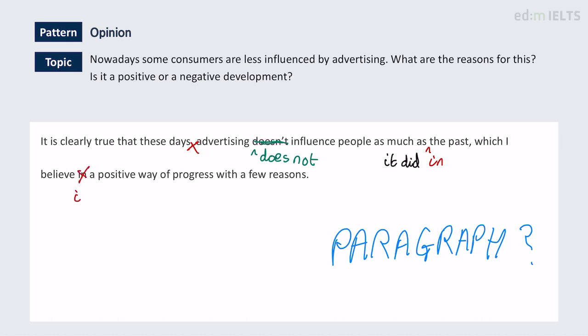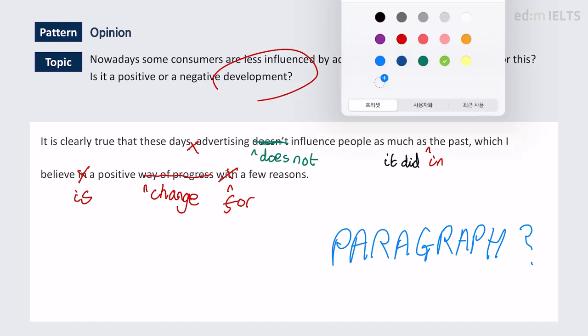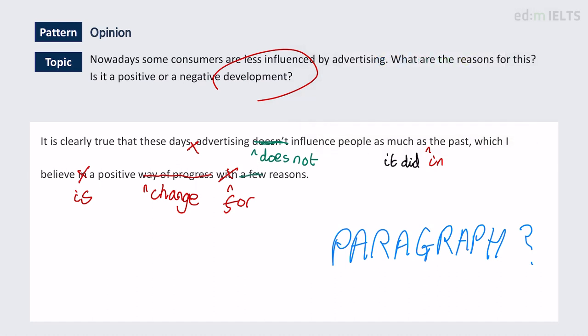If you don't want to repeat the word 'development,' you could say 'positive societal change.' We use the preposition 'for' — not 'with' — as in 'for a few reasons.' And 'a few' is a bit informal; let's say 'for various reasons.' A much better sentence would be: 'It is clearly true that these days advertising does not influence people as much as it did in the past, which I believe is a positive societal change for various reasons.' But we're still not meeting the expected requirements of a full introductory paragraph.